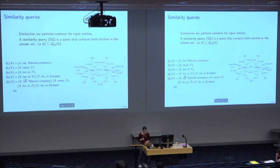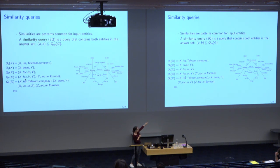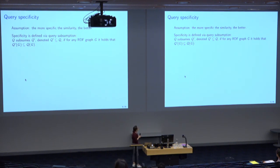More formally, a similarity query is a query in our language that has both entities in its answer set over the given data. In our example, these are the similarity queries: both entities are telecom companies, they are located in Europe, they own other entities, and so on. Not every similarity query is equally informative. We operate under the assumption that the more specific a similarity query, the more informative it is, because it captures more information common to the two entities.